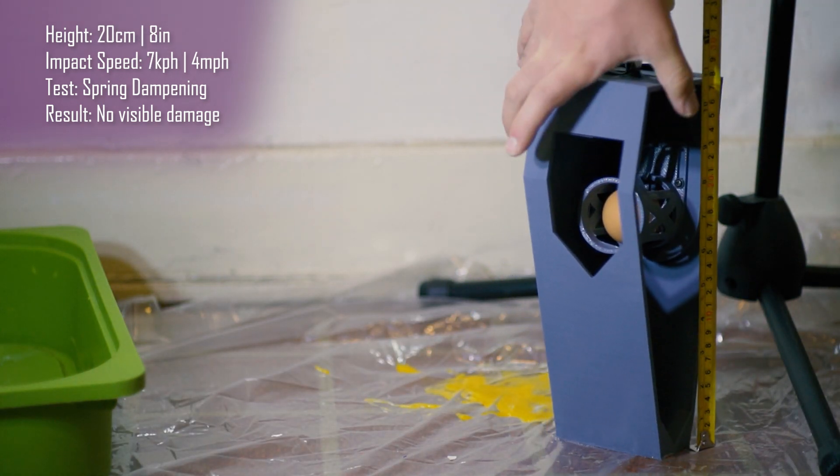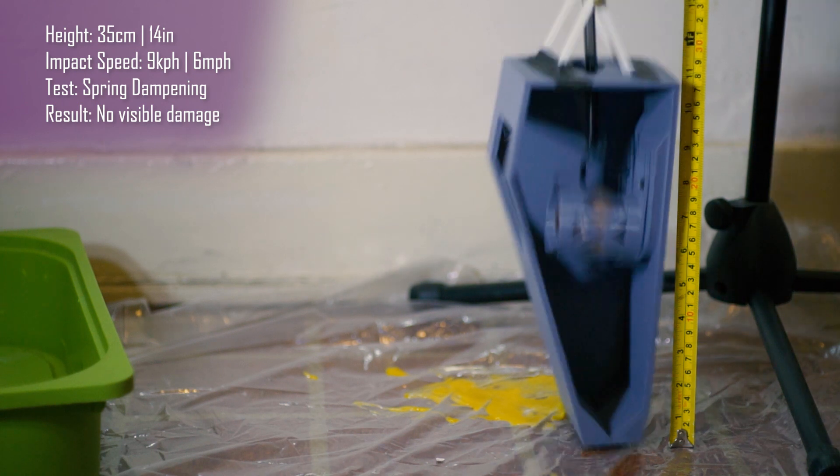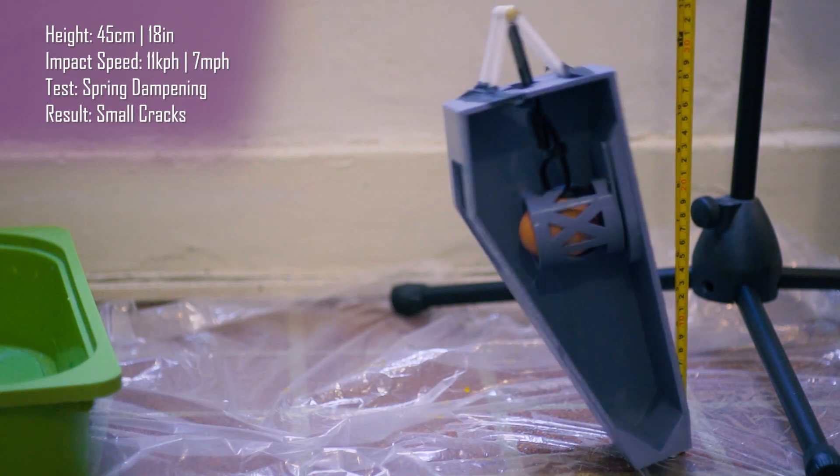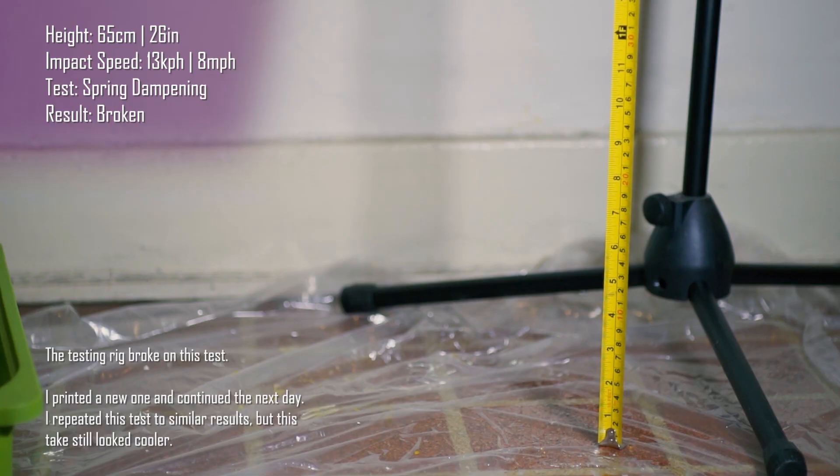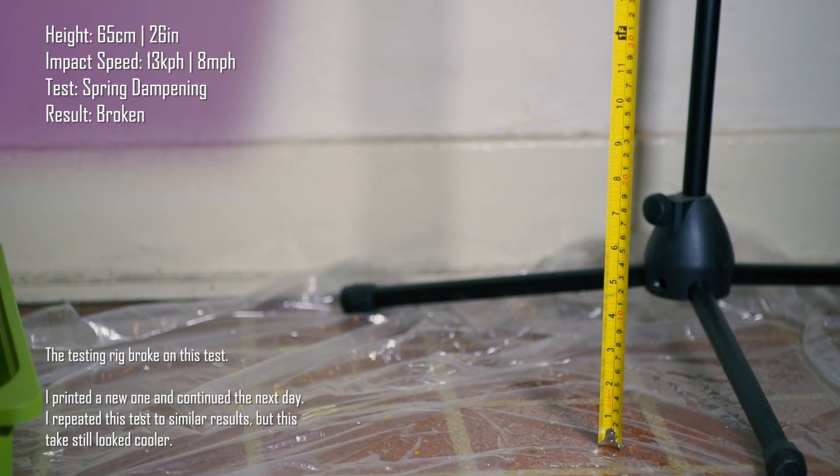I wanted to test it anyway and I found that it improves egg safety quite a bit. They started cracking around 45 centimeters and they consistently started breaking at 65, which is over three times as high as with no dampening.